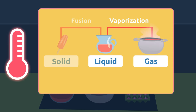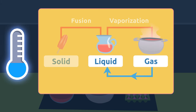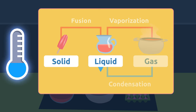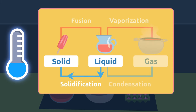These two processes can occur the other way around — this happens when we cool matter instead of applying heat. If we cool a gas, it becomes a liquid; this process is called condensation. If we freeze liquid matter, it will become a solid; this process is called solidification.